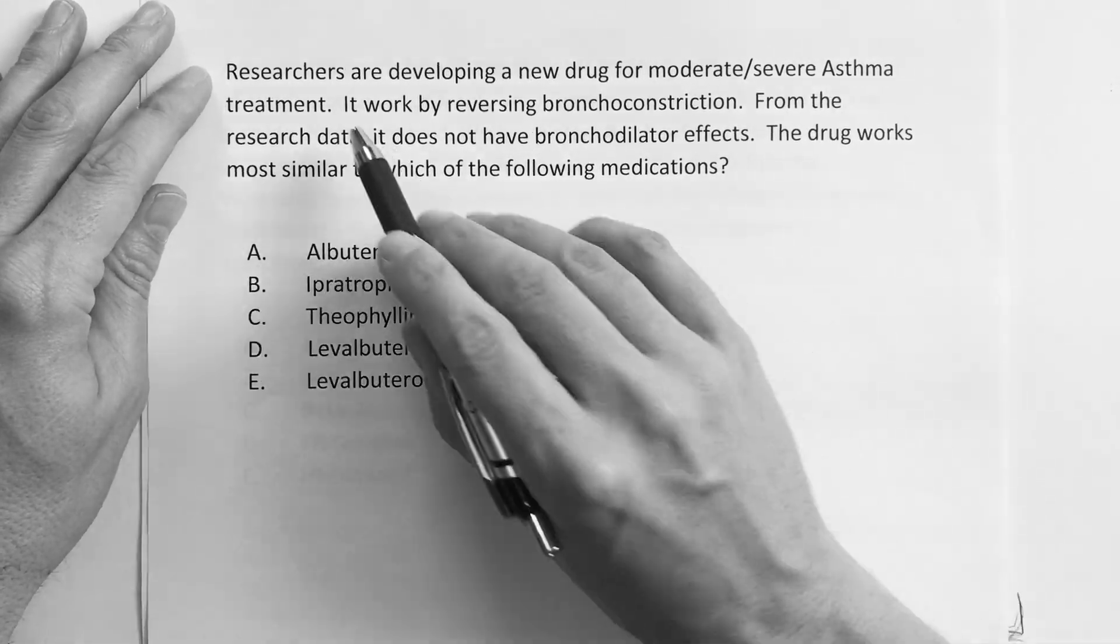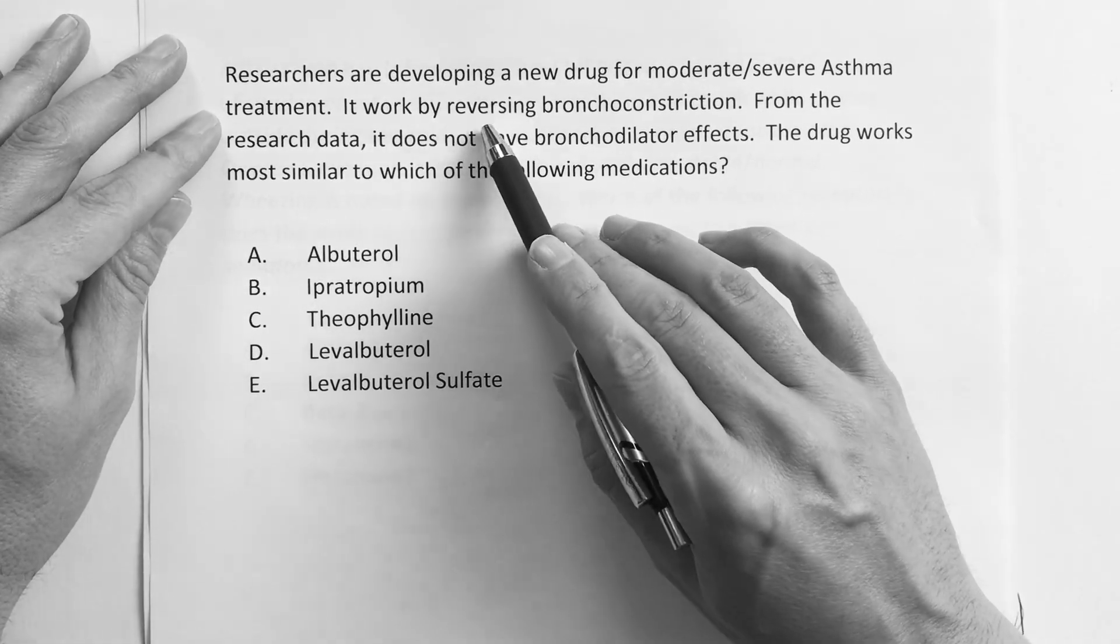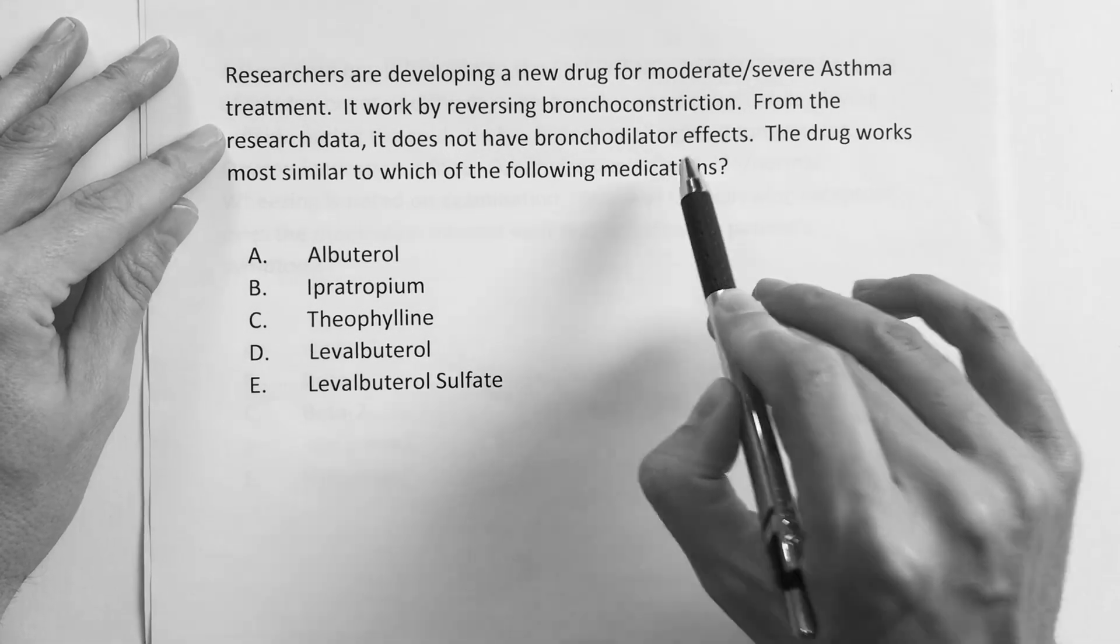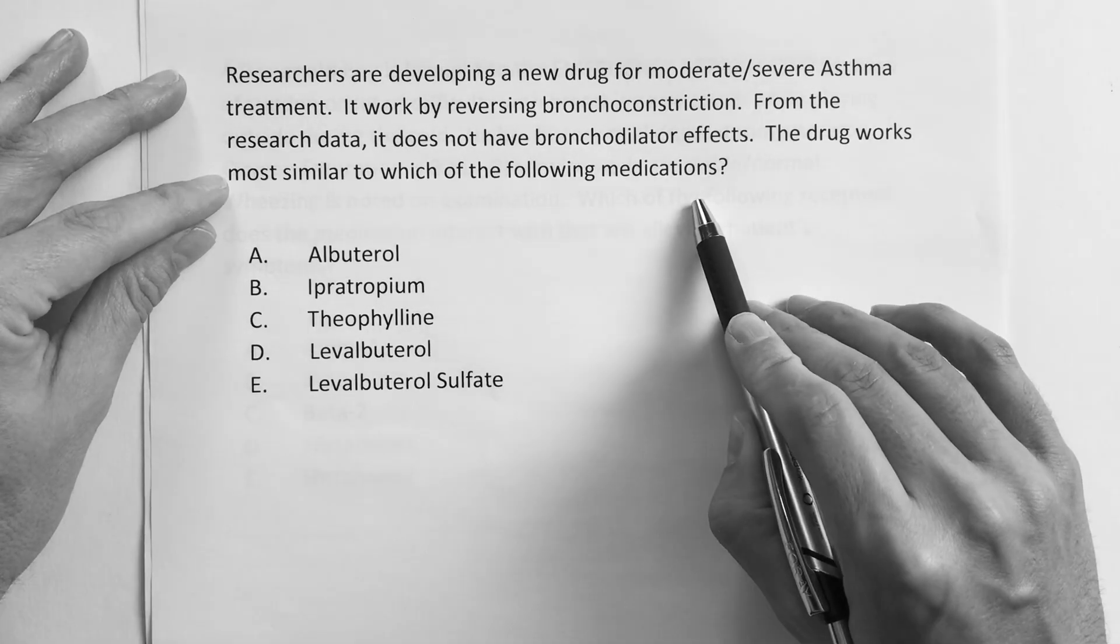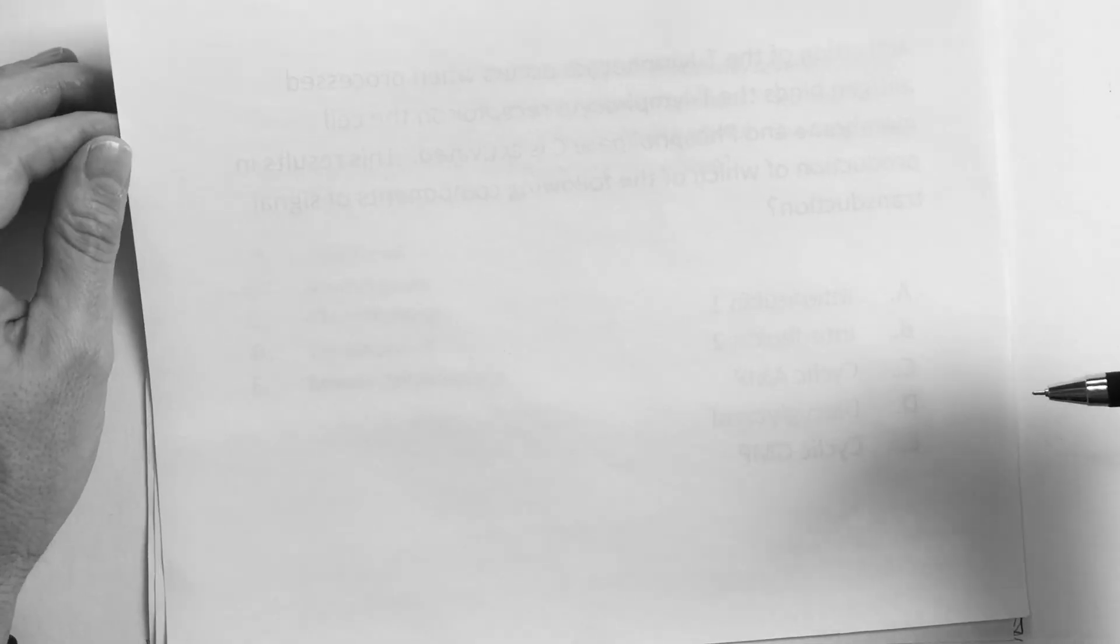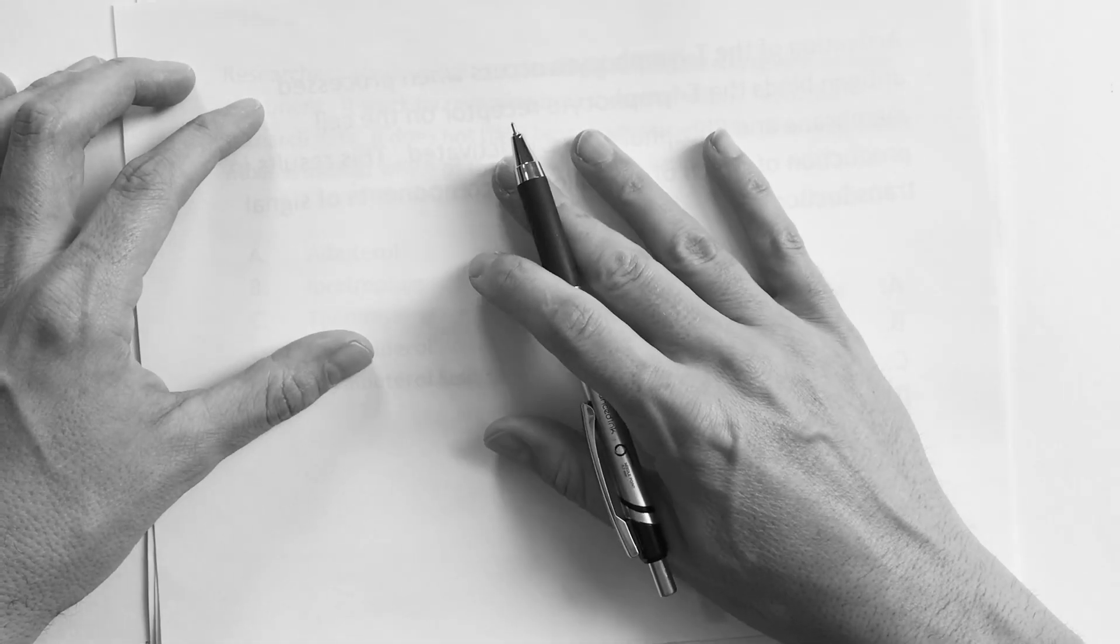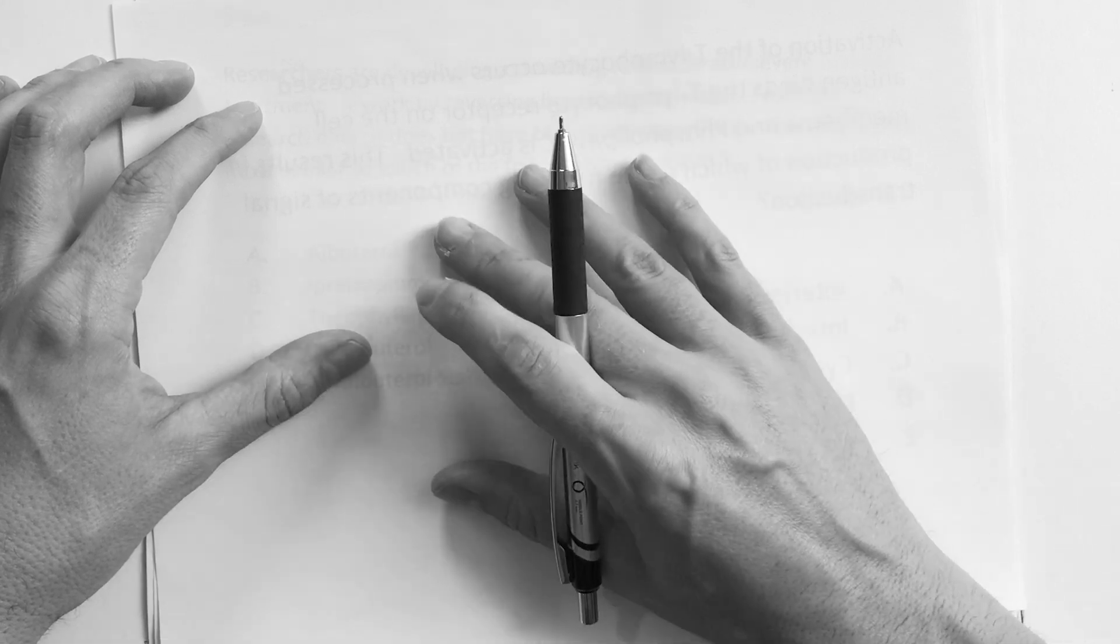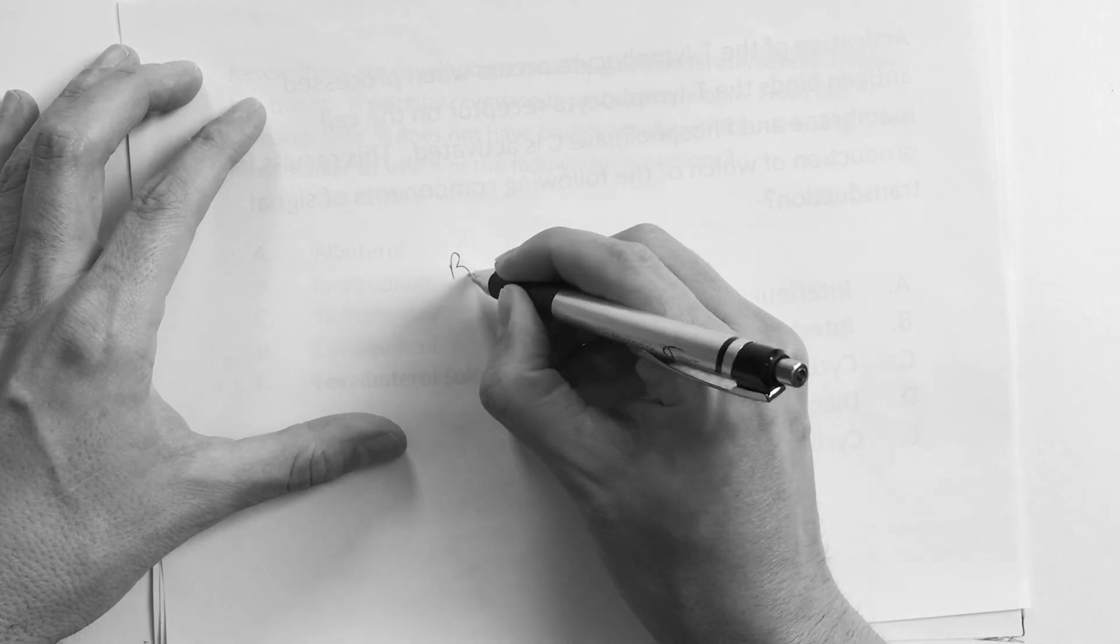Here's the question: researchers are developing a new drug for moderate to severe asthma treatment. It works by reversing bronchoconstriction from the research data. It does not have bronchodilator effects. The drug works most similar to which of the following medications? There's a pathway I've seen multiple questions on, so you've got to have this pathway down for your step exam when it comes to the lung. This is straight from your step one book.